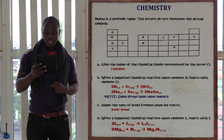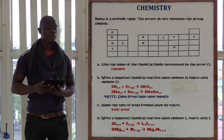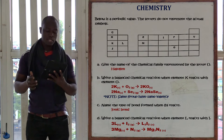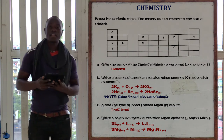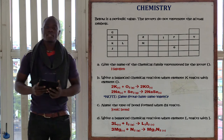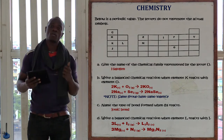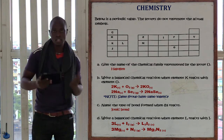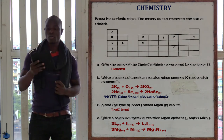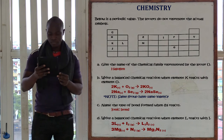Question A asks: give the name of the chemical family represented by letter O. The name of the chemical family represented by letter O is halogens — that is group number 7. The elements in group 7 are called halogens or salt producers. So the answer is halogen.